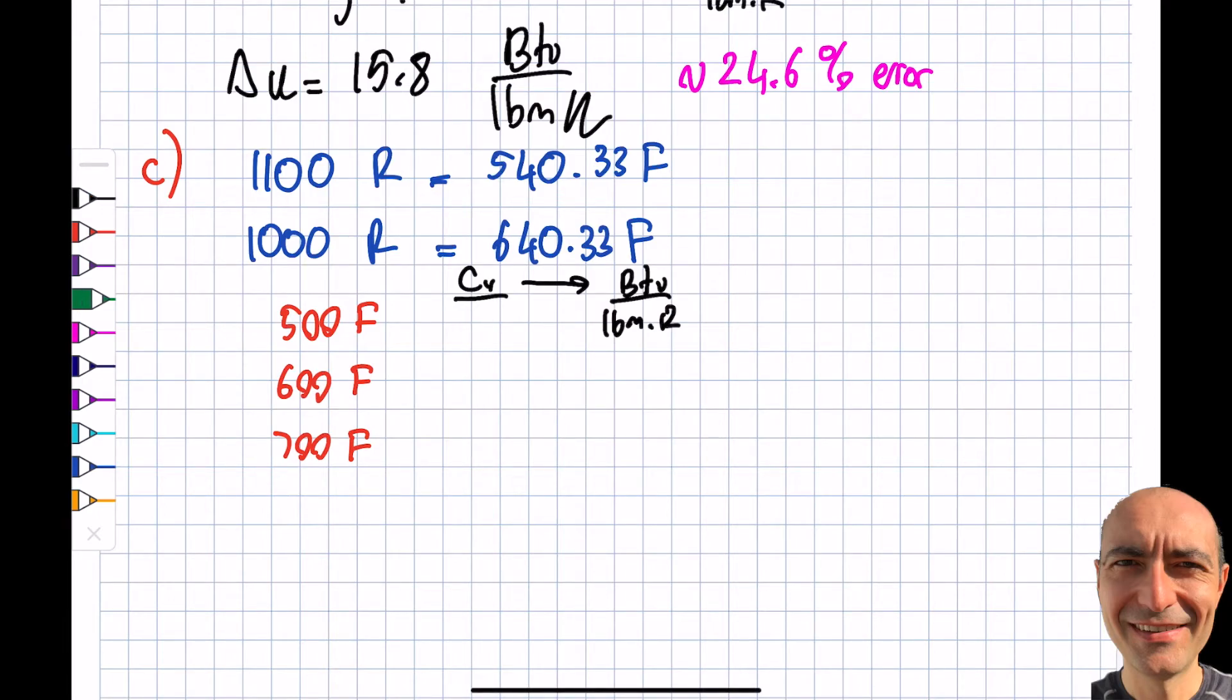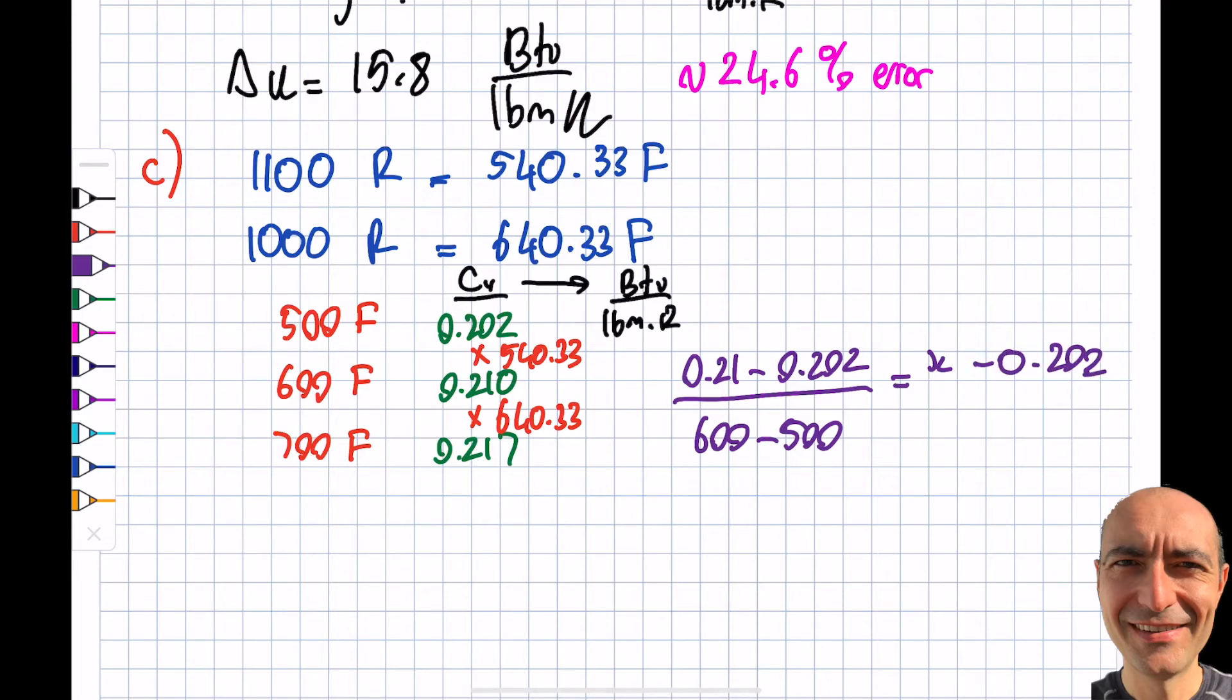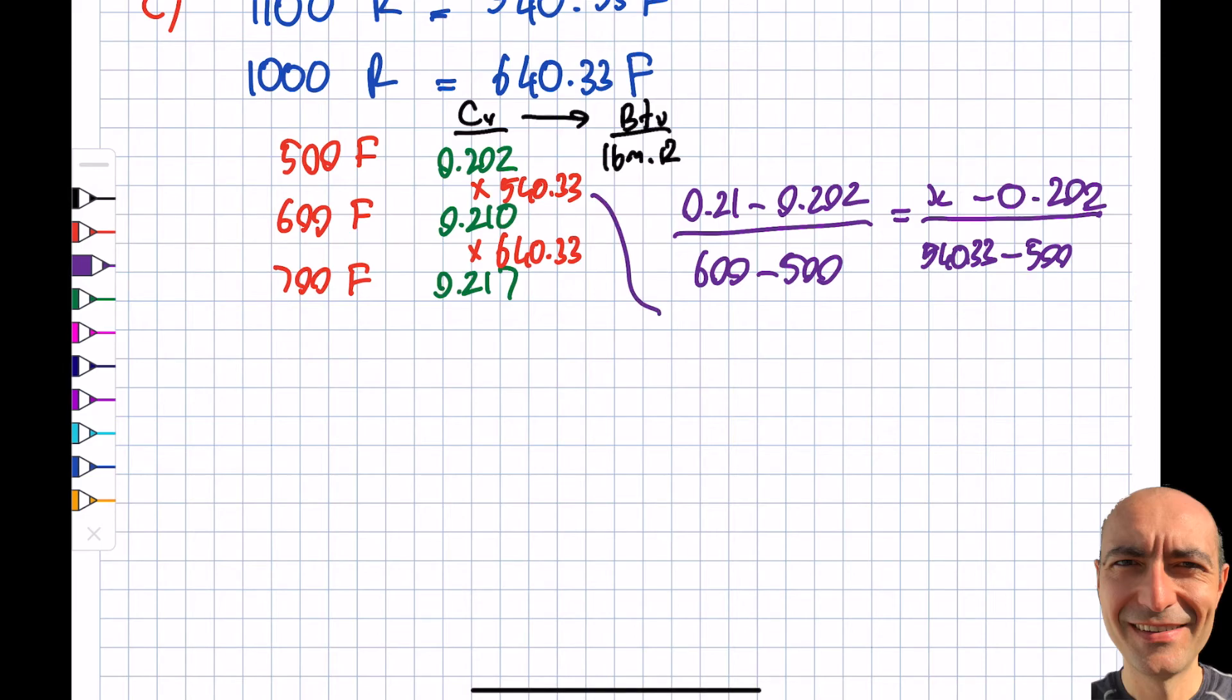But I look at the chart - I have 500 Fahrenheit, I don't have 540.33, I have 600 Fahrenheit, I have 700 Fahrenheit, and my cv is listed there. The unit is BTU per pound mass times Rankine, not Fahrenheit, it's kind of weird. It says 0.202, 0.210, 0.217. So from module 3, I introduced you to the concept of interpolation. My 540.33 and 640.33 fall right in between those two values. So I'll do an interpolation. 600 minus 500 will be equal to this u at 540.33 minus 0.202. This value will turn out to be 0.2052. This number will turn out to be 0.212.